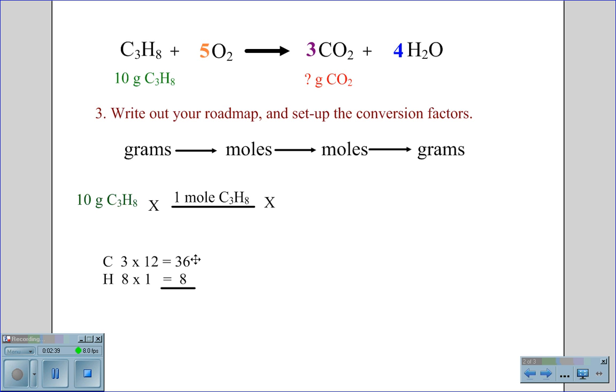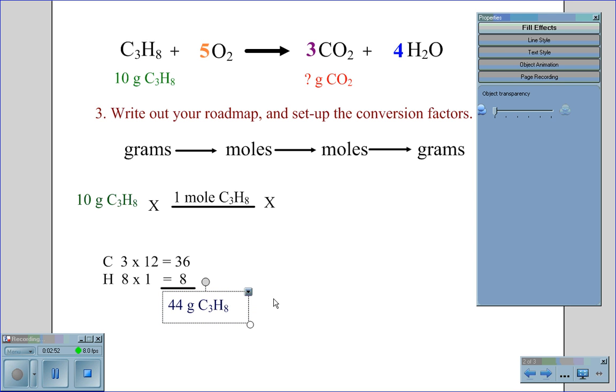Three times 12 is 36. We have eight atoms of hydrogen. The mass of hydrogen is one. Eight times one is eight, which gives us a mass of 44 grams of C3H8 propane. This is the molar mass of this molecule, and it allows us to cancel grams of propane.